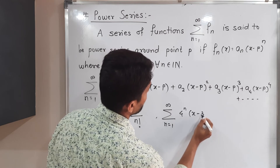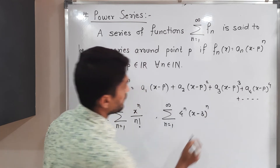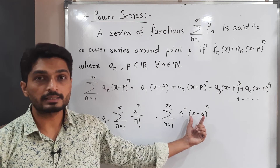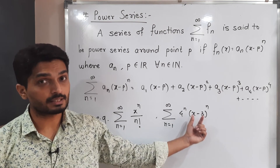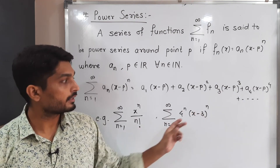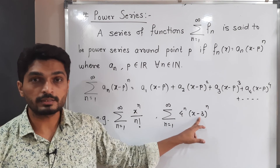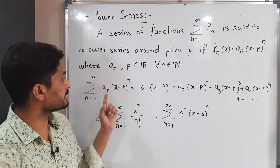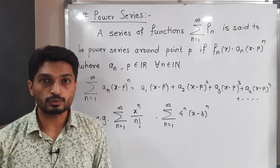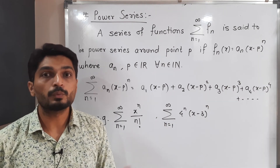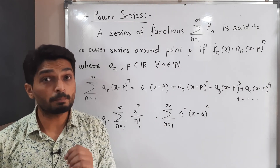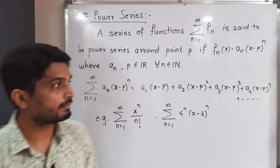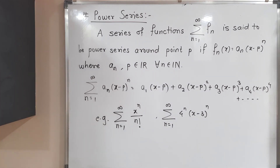Let us discuss the second example: summation, n running from one to infinity, of 4ⁿ times (x minus 3) raised to n. This is also a power series since the bracket (x minus 3) raised to n is present, and it is around point three. Here aₙ is 4ⁿ. All such types of series we can call power series, around their particular point p.